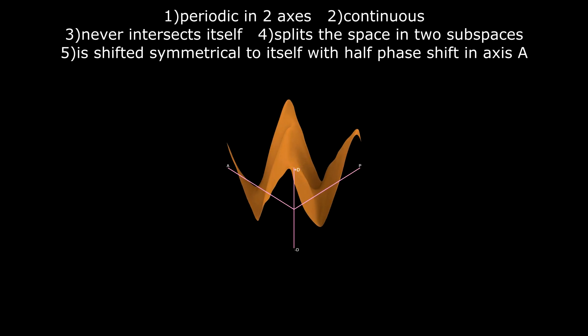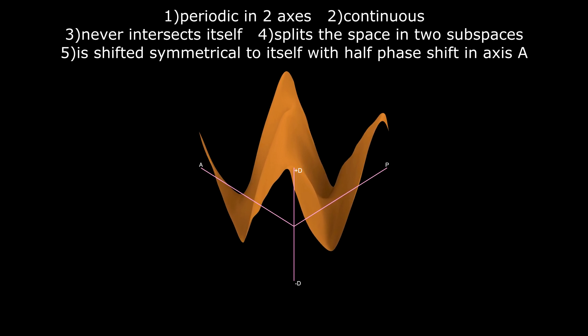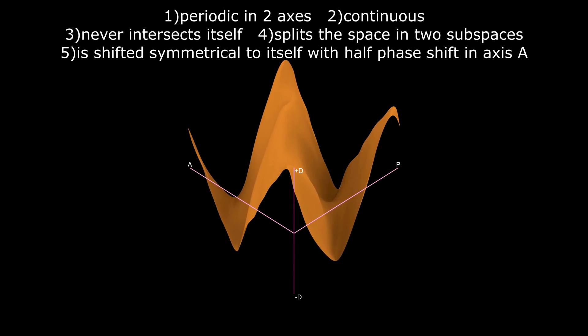The surface is continuous and never intersects itself. It splits the space in two subspaces. And the surface is shifted symmetrical to itself with half phase shift in axis A.